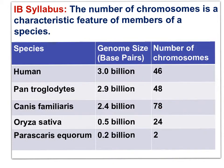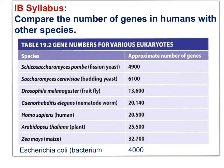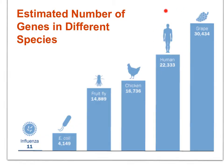Comparing the number of genes in humans with other species: the number of genes does not equal genome size. Humans have a similar number of genes to a roundworm, more genes than yeasts or bacteria, but fewer genes than corn (ZMAs). Humans are estimated to have just over 20,000 genes. Alternative splicing of messenger RNA — resulting in more than one polypeptide from the same raw transcript — is one explanation for how human complexity is controlled by a relatively small number of genes.